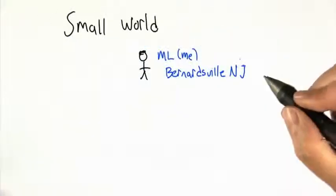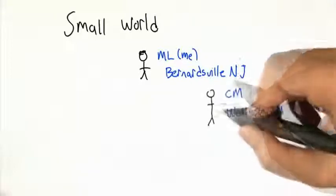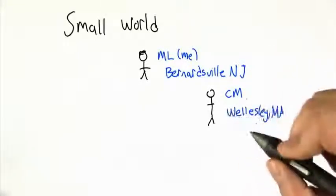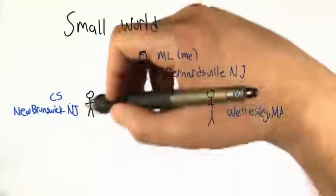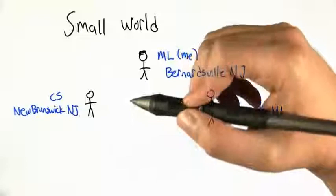So this is me, essentially. I live in Bernardsville, New Jersey. This is Chris M. He lives in Wellesley, Massachusetts, and he's very tall. Finally, this is Chris S., and I'm not sure exactly where he lives, but I'm going to say New Brunswick, New Jersey.